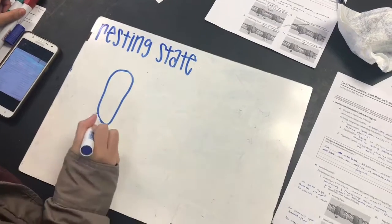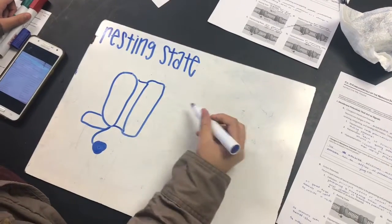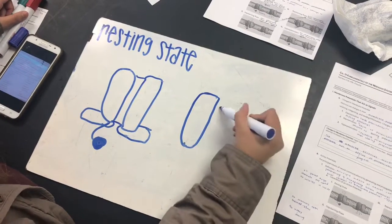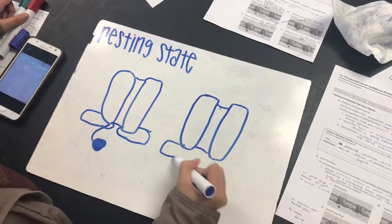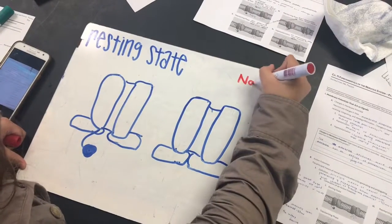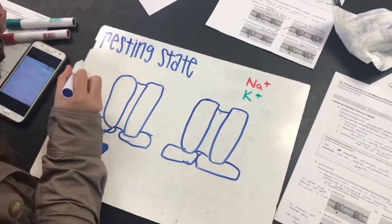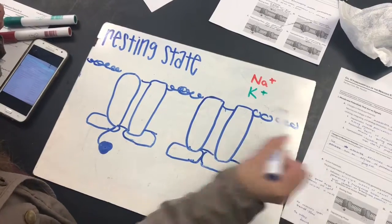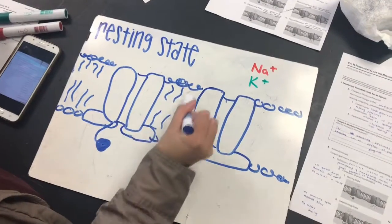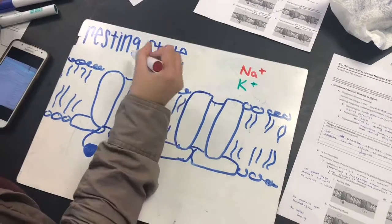Now we are moving on to resting state, which is really important. Here you'll see our ion-gated channels for sodium and potassium embedded in the neuron membrane. During resting state, both channels are closed. There is a higher concentration of sodium outside the cell and a higher concentration of potassium inside the cell. This is maintained by the sodium-potassium pump, which uses active transport to pump three sodiums out and two potassiums in.